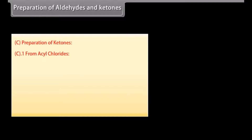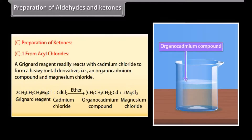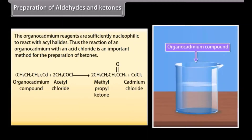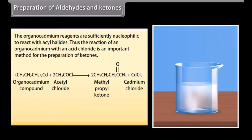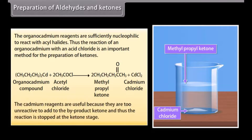Preparation of ketones from acyl chlorides. A Grignard reagent readily reacts with cadmium chloride to form a heavy metal derivative — an organocadmium compound — and magnesium chloride. The organocadmium reagents are sufficiently nucleophilic to react with acyl halides. Thus, the reaction of an organocadmium compound with an acid chloride is an important method for preparing ketones. Cadmium reagents are useful because they are too unreactive to add to the ketone product, so the reaction stops at the ketone stage.